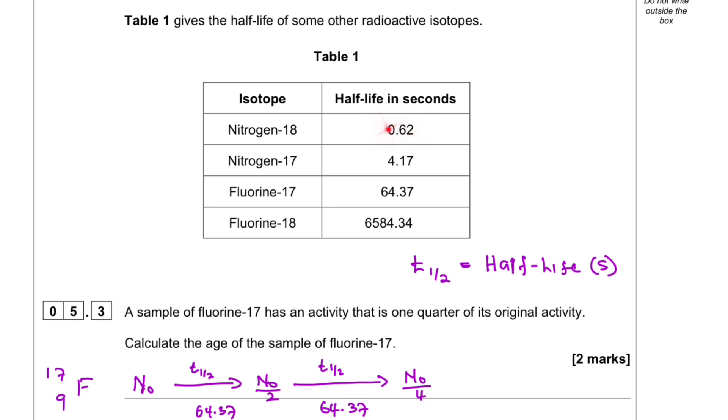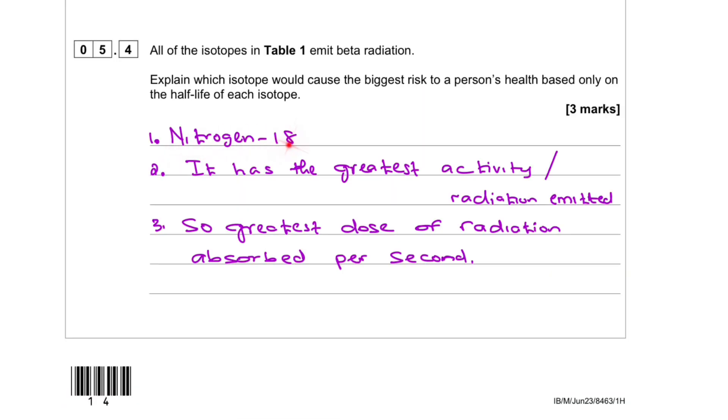And that means you're going to get more exposure. So Nitrogen-18 has the greatest activity because half-life is shorter. So radiation emitted. So the greatest dose of radiation absorbed per second.